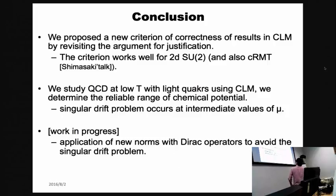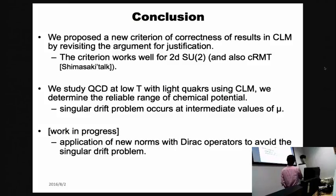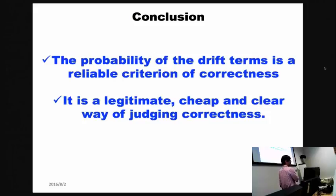In conclusion, we proposed a new criterion for the correctness of the complex Langevin method by revisiting the argument for its justification. We applied this criterion to the two-dimensional SU(2) gauge theory and it works well; we also confirmed it works for chiral random matrix theory. The main conclusion is: the probability distribution of the drift terms is a reliable and cheap criterion of correctness. If you perform a complex Langevin simulation, you already have the drift data — just make the probability distribution and it will tell you whether your simulation is reliable.